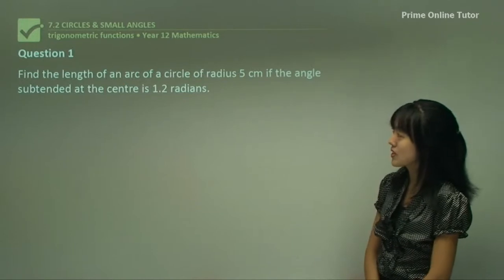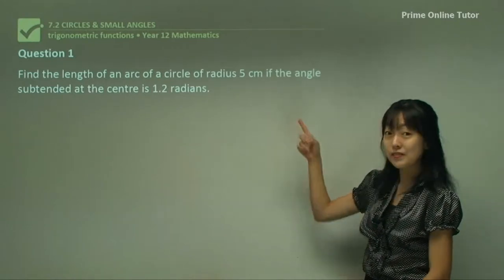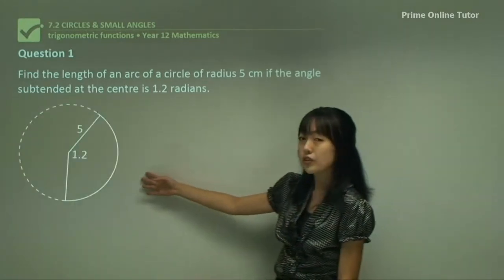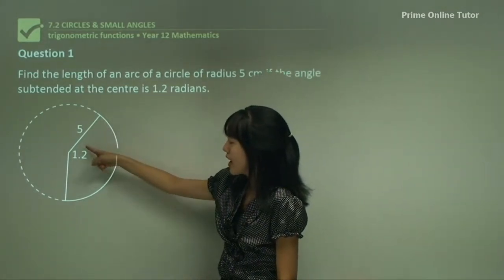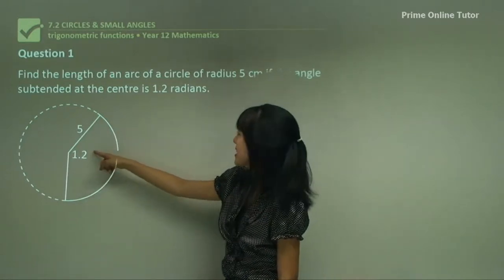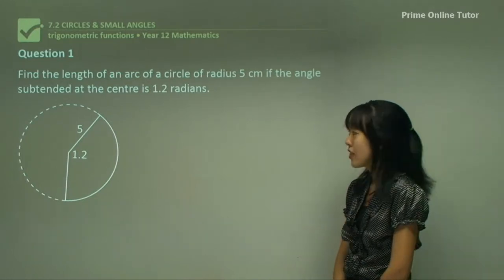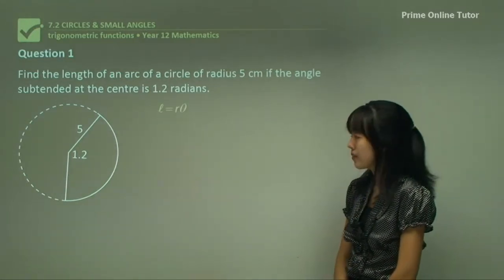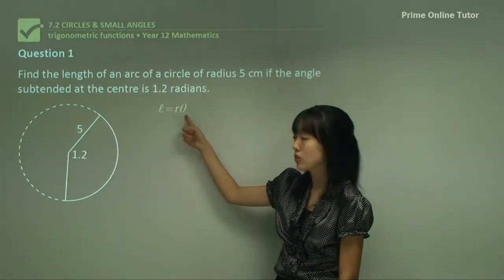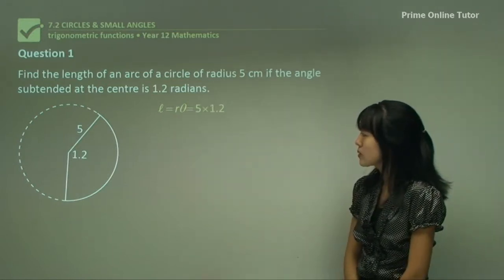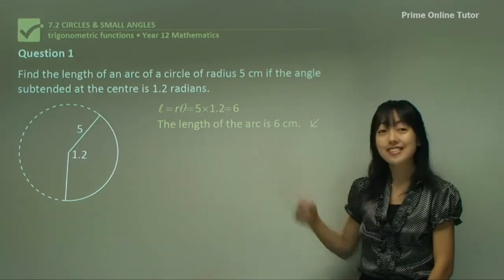Now let's try some questions. First step is to draw what they've stated. The question tells you the radius is 5 and the angle, which is in radians, is 1.2. All we have to do is substitute those values into L equals R theta. So R is 5 and theta is 1.2. Five times 1.2 gives you 6, so the length of the arc is 6 centimetres.